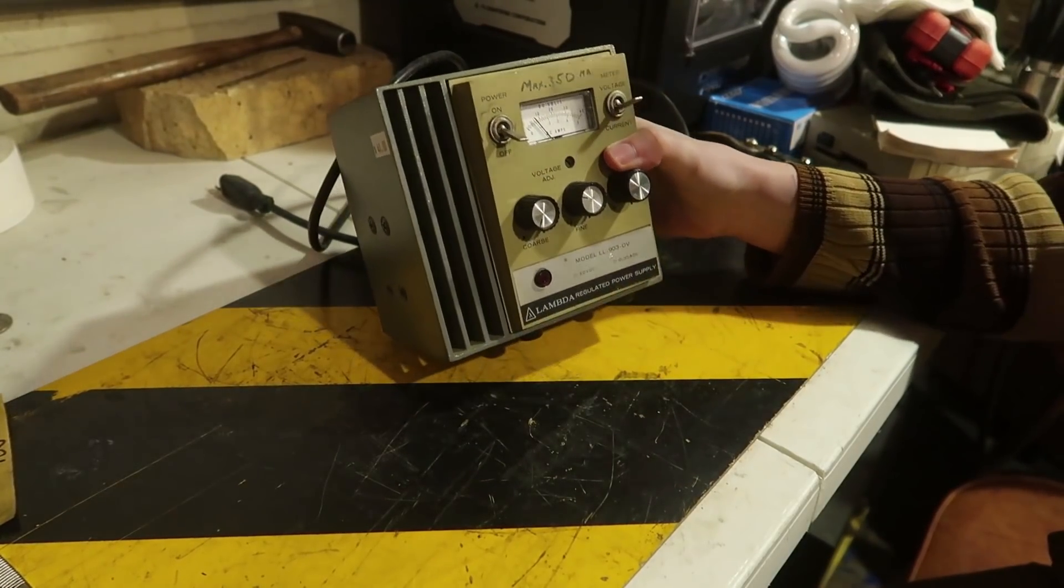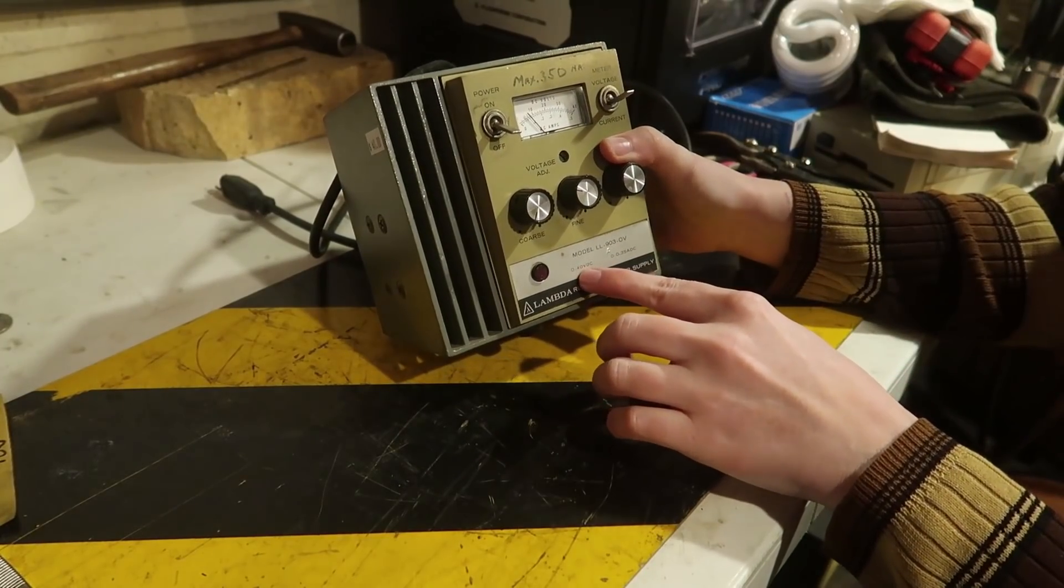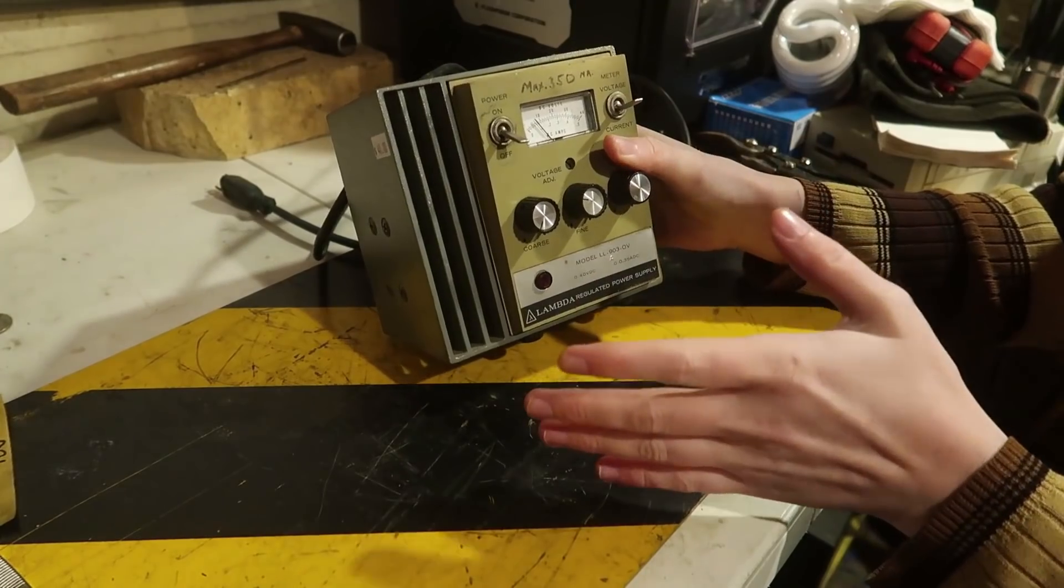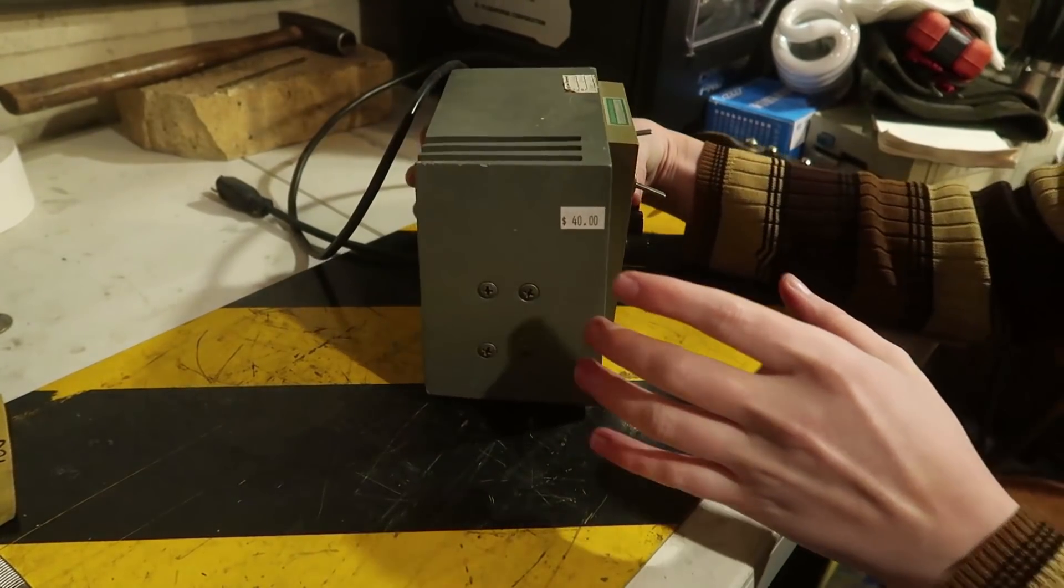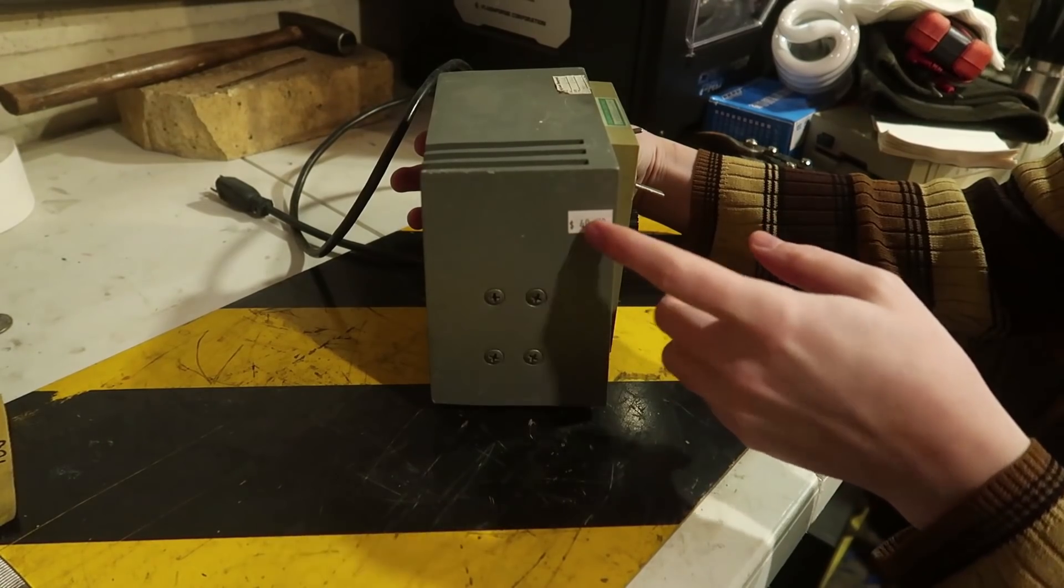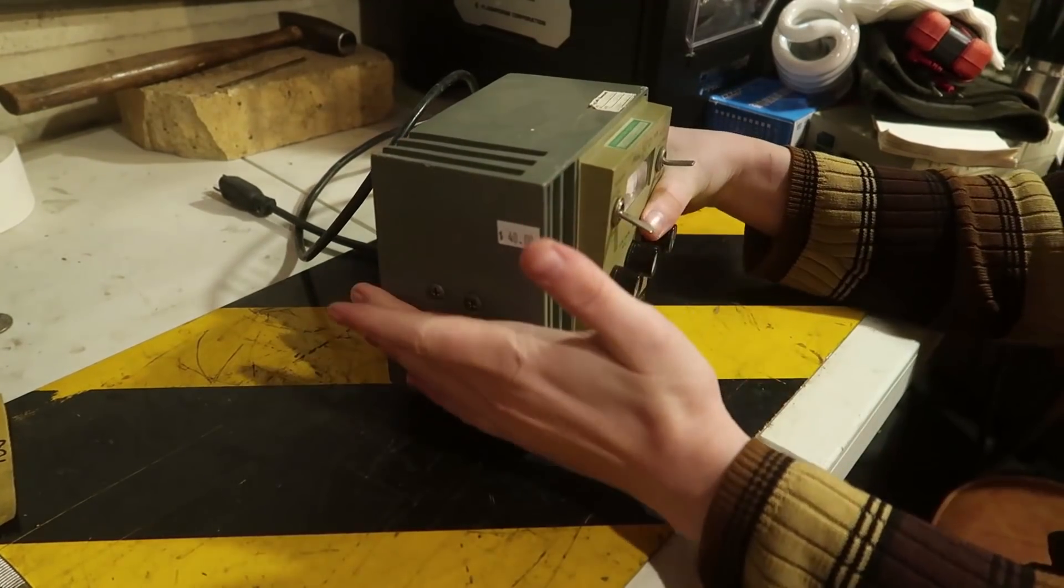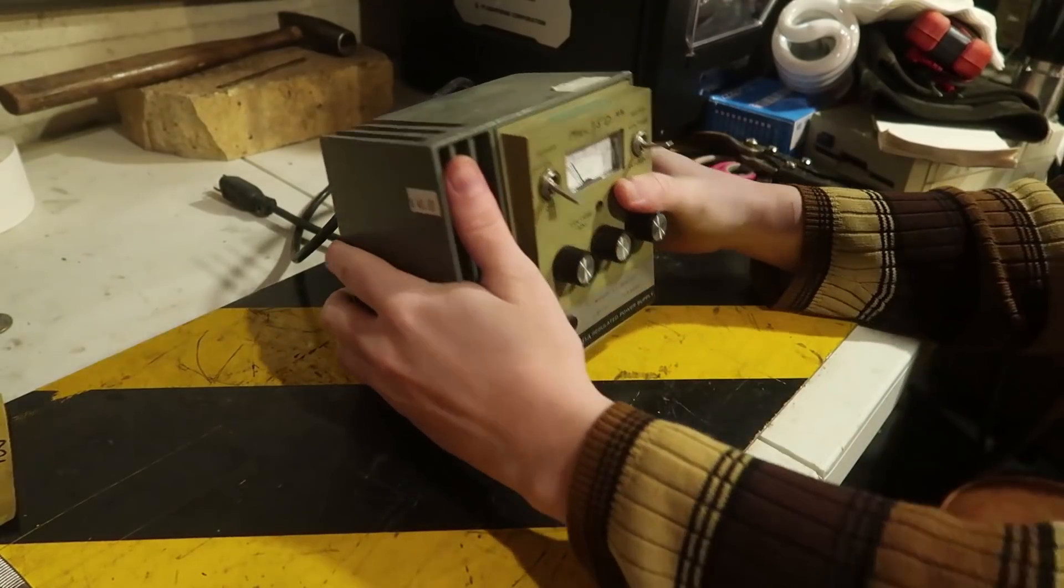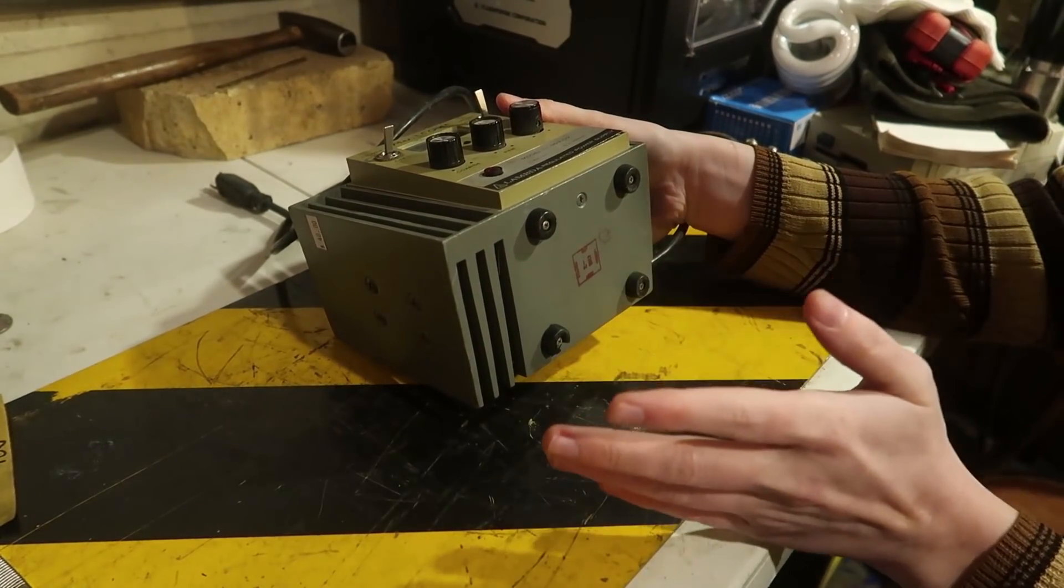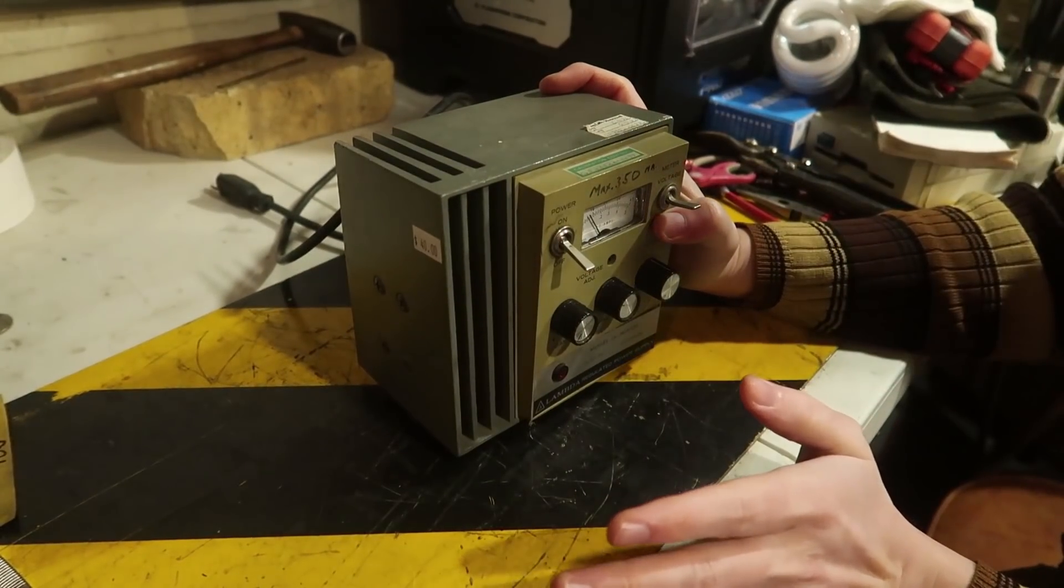A few years ago I bought this lambda regulated power supply. It goes from 0 to 40 volts and 0 to 350 milliamps. I bought it at Excess Solutions. It says $40. I think I probably talked them down to like $30 or $25. But either way it was a bit pricey but it's a cute little power supply and the bottom says 78 so I believe it's from 1978 and it has a lot of issues.